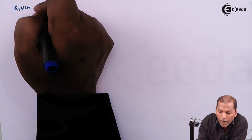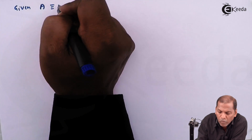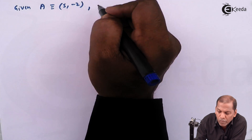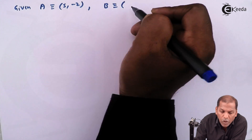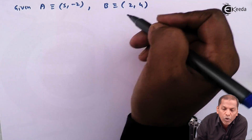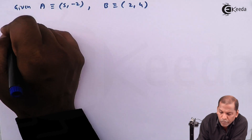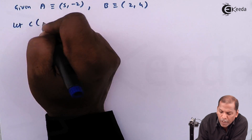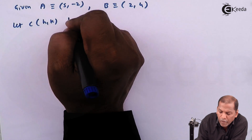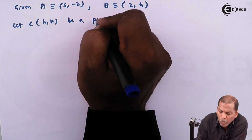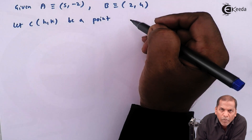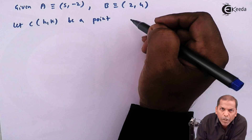Given: A is equivalent to (5, -2) and B is equivalent to (2, 4). Let C at (h, k) be a point that lies on the locus y = 1 + x + x².